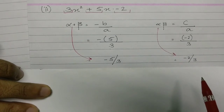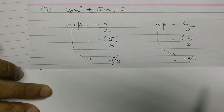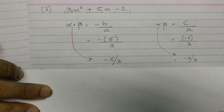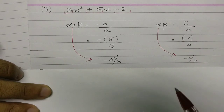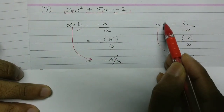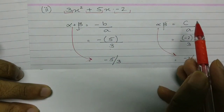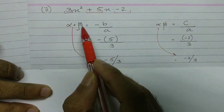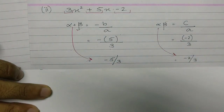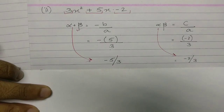So the sum of zeros is −5/3 and the product of zeros is −2/3. If you have understood what I've explained, please hit the like button and share it with your friends so they also know how to find the sum and product of zeros — alpha and beta. Thank you very much and God bless you.